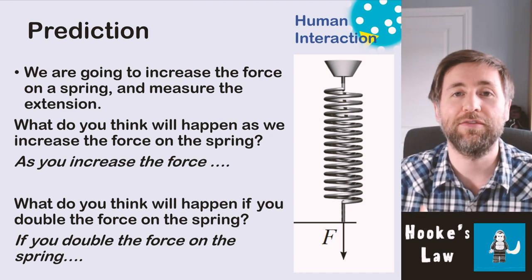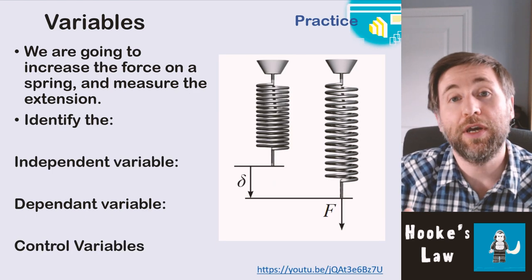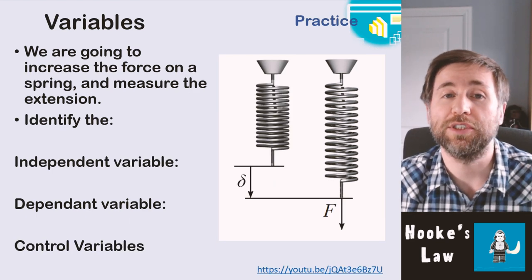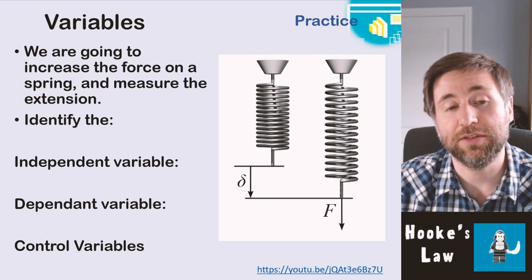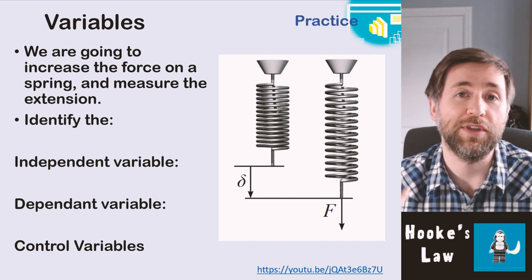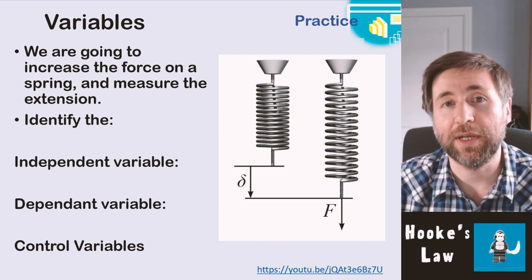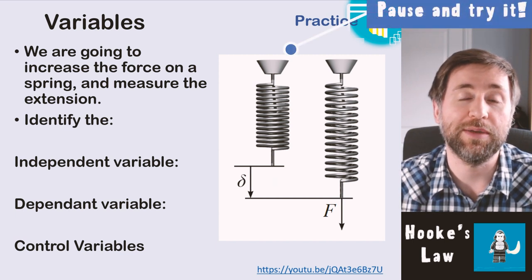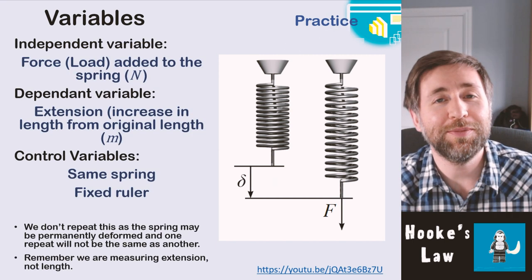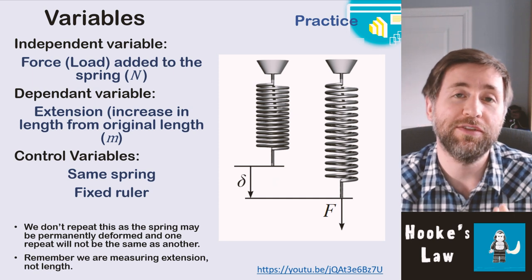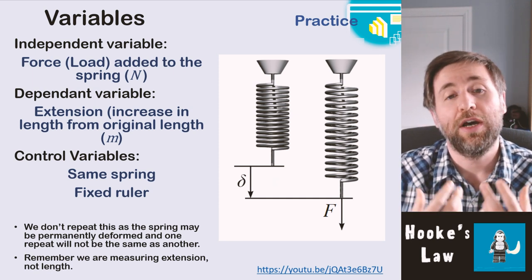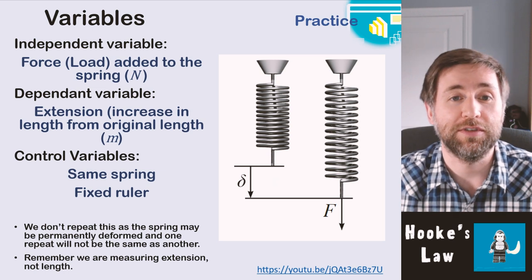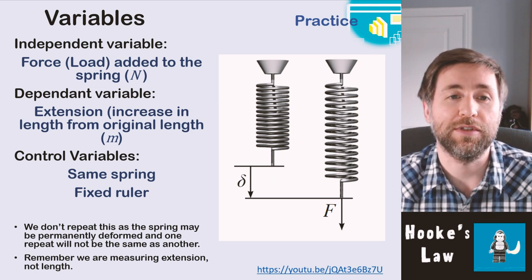A straight line graph through the origin. What we're going to do in this practical is increase the force on the spring and measure the extension. Think about what's the independent variable, what's the dependent variable, and what are the control variables. The independent variable — what we change — is going to be the force, or we call that the load on the spring. It's measured in newtons.